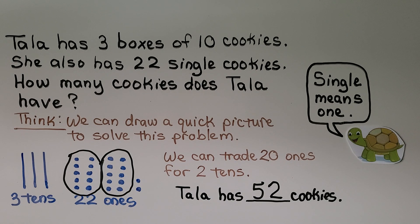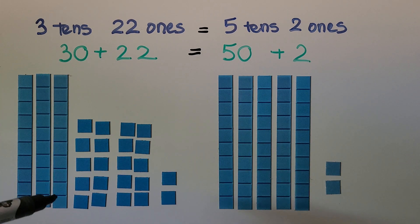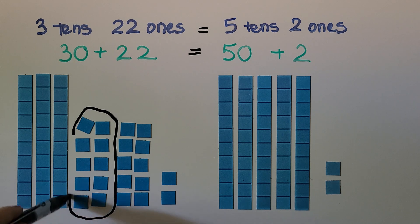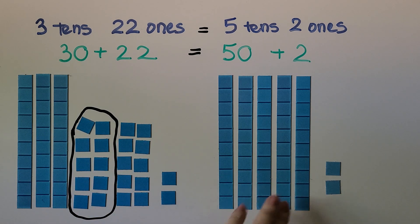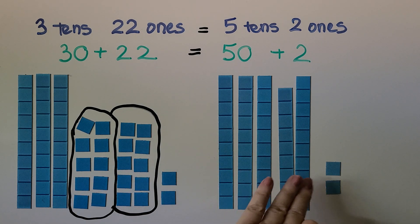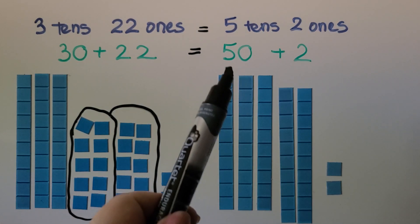When you're making a quick picture to help solve a problem, remember it's a quick picture — not a fancy picture. We just make a line for a 10 and a dot for ones. She had three 10s and 22 ones, and it was equal to five 10s and two ones. We traded this group of 10 ones to be one 10, and this group of 10 ones to be another 10, and then we had two left over. So three 10s and 22 ones is equal to five 10s and two ones. 30 plus 22 is equal to 50 plus 2.